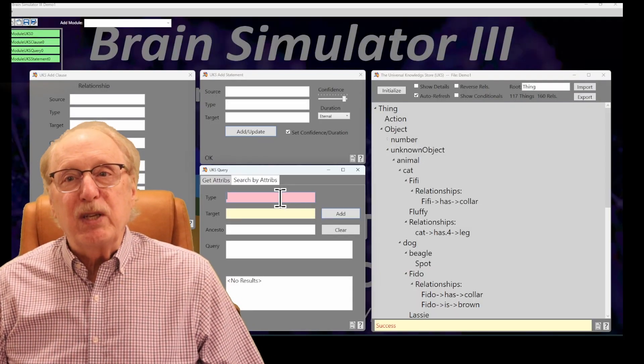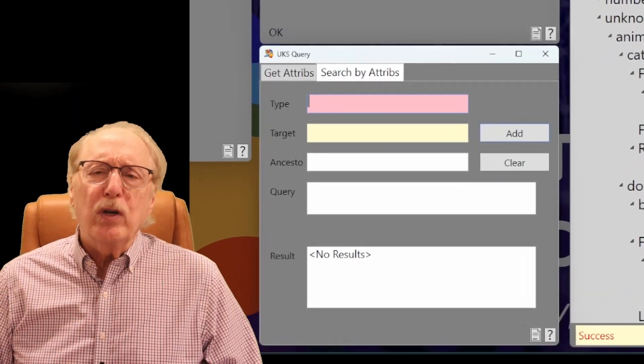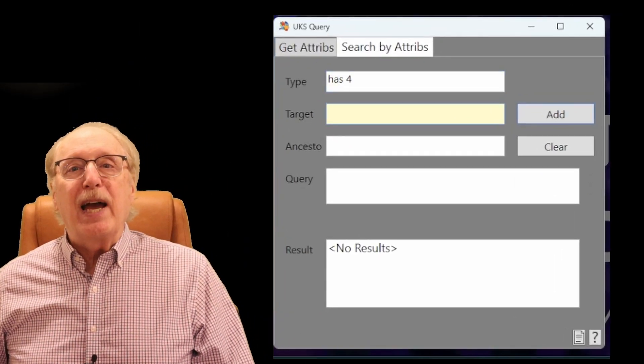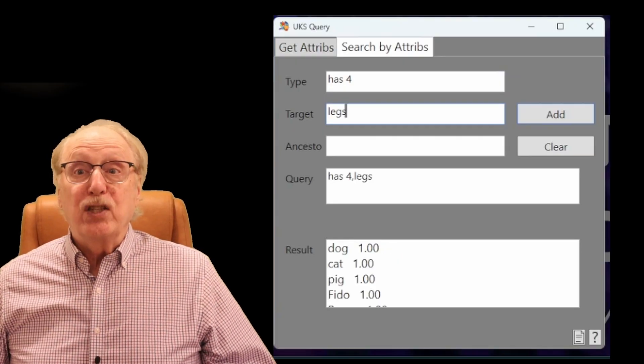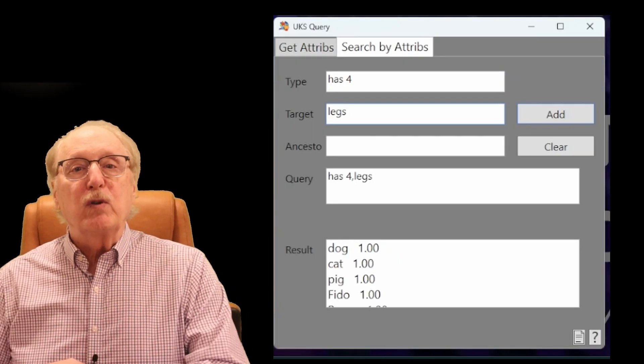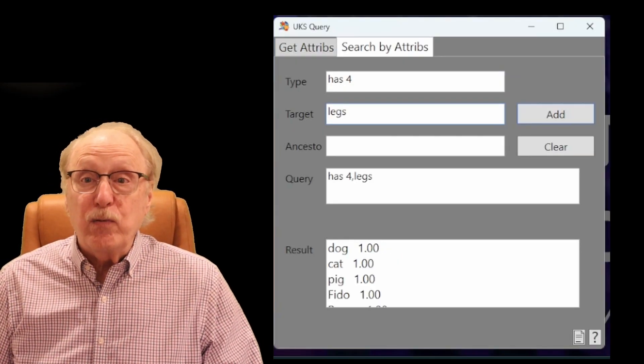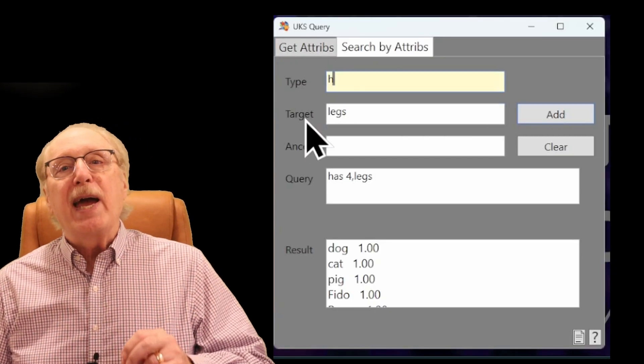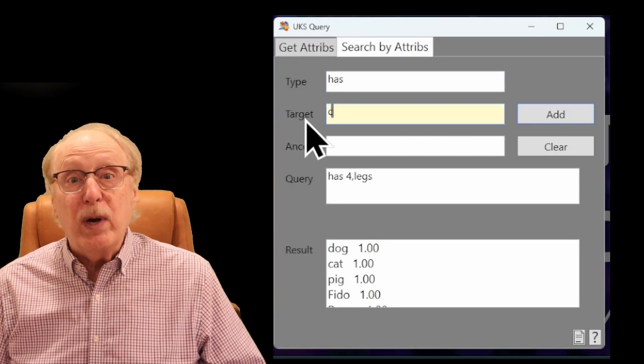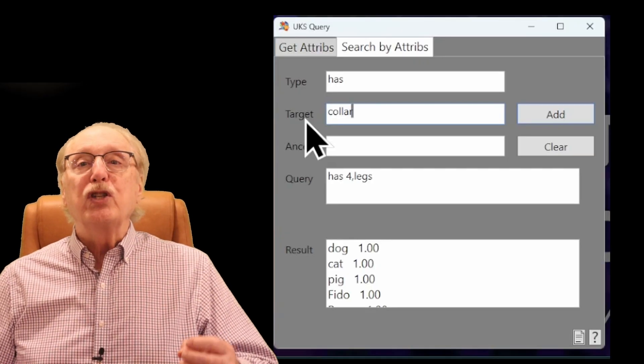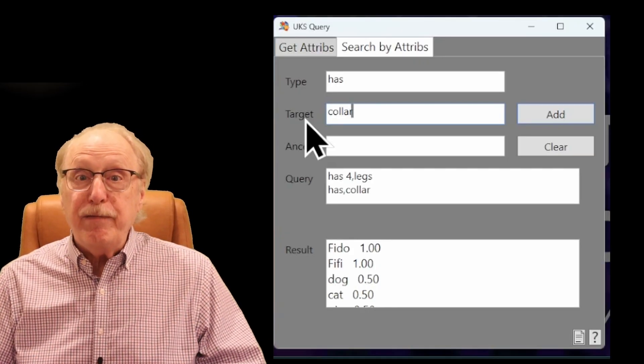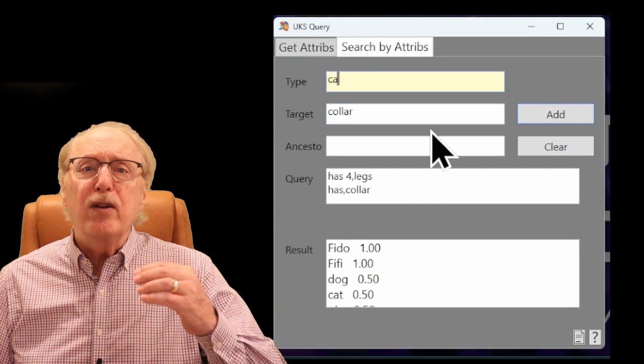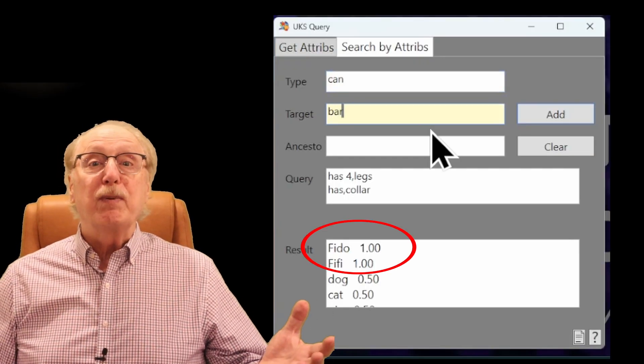As a quick demonstration, here's how this works in the Brain Simulator 3. If we give the system some attributes such as has four legs, the system will respond with everything which has four legs, along with a confidence factor. If we add the requirement that it also has a collar, now we're just getting Fido and Fifi as good matches. If we further add that this thing can bark, Fido comes up as the clear winner.